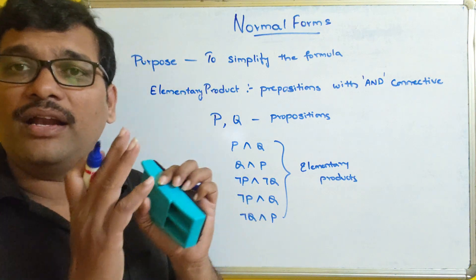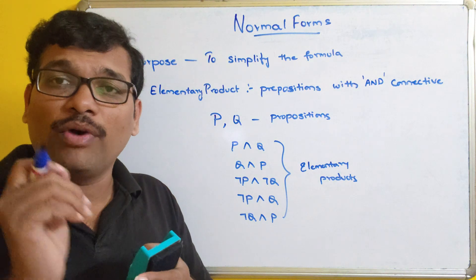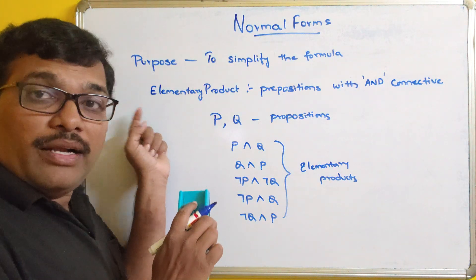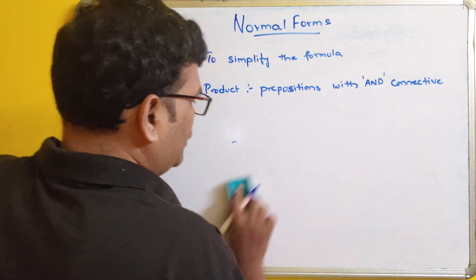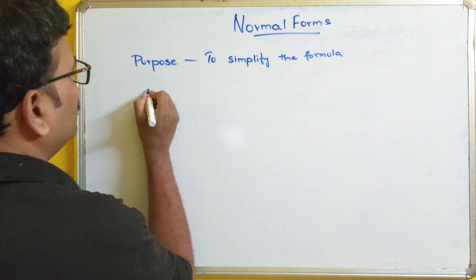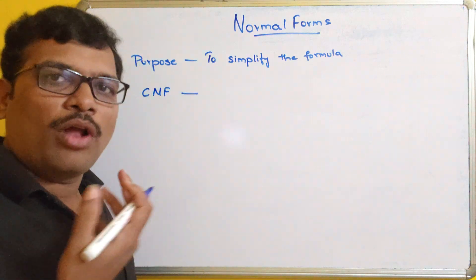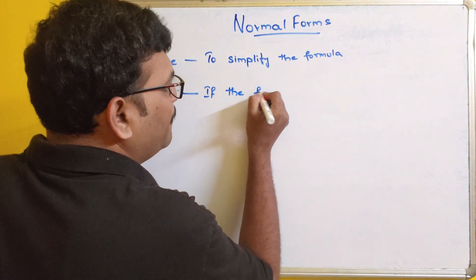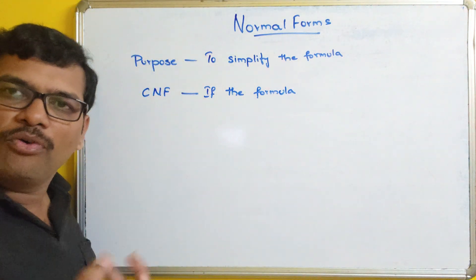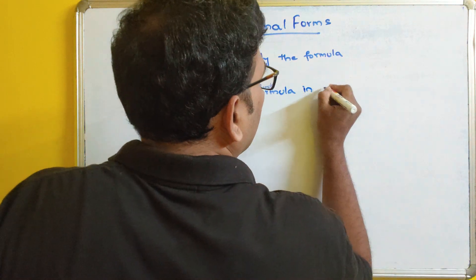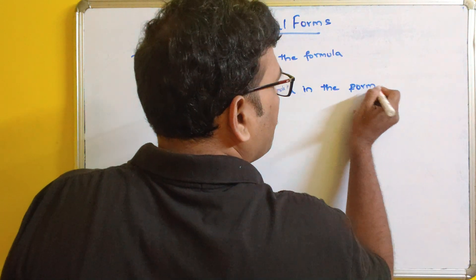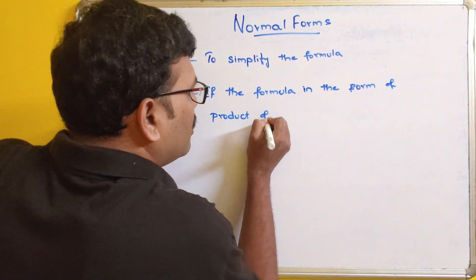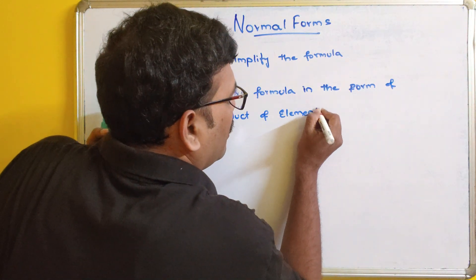Now we will see the definition of CNF and DNF, and then we will stop. In our next session, we will see one example of how to convert a formula into either CNF or DNF. Remember these two terms: elementary product and elementary sum. CNF means conjunctive normal form. If the formula — that means a compound or composite formula — is in the form of a product of elementary sums, it is called CNF.